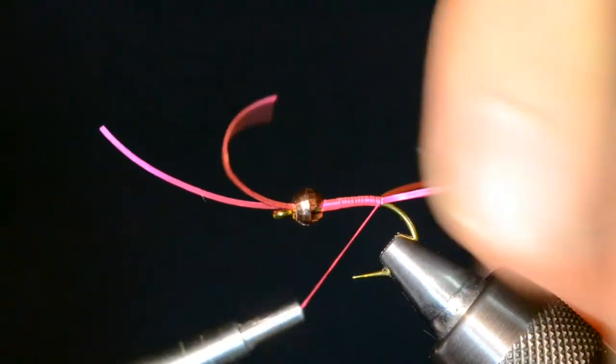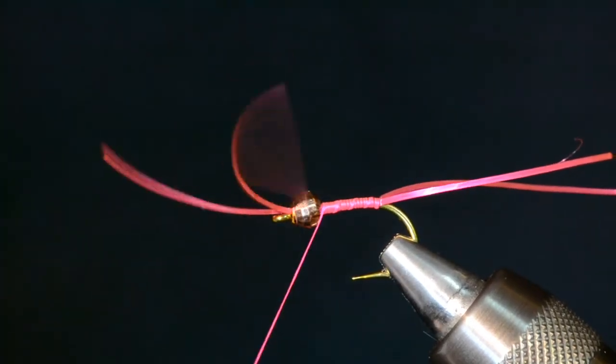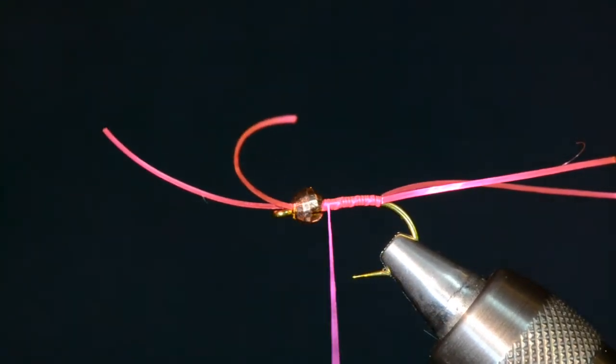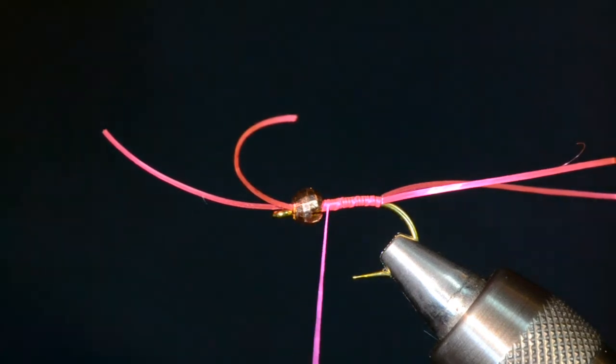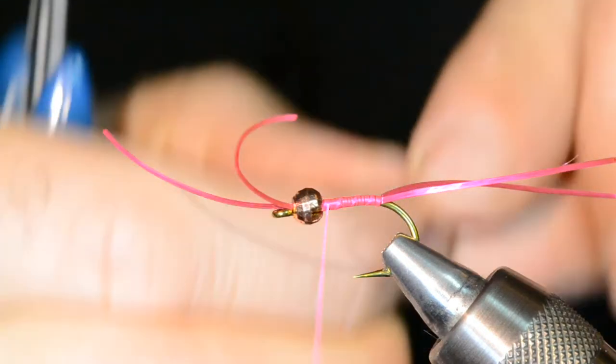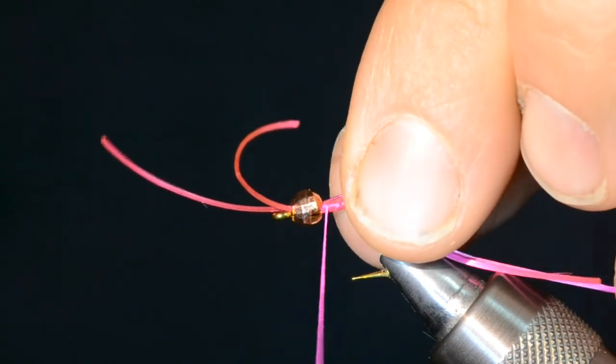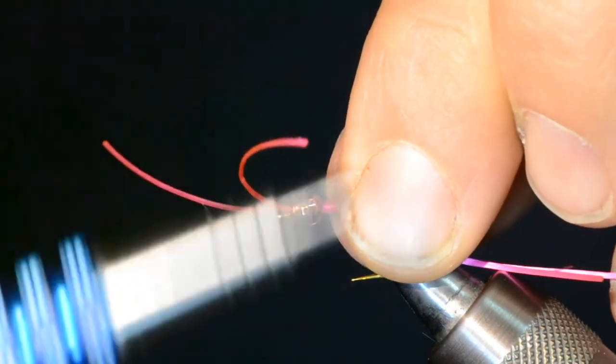Maybe one more wrap. I like where that's at. Now I'm going to take and advance my thread back up there right next to the bead. The next step is to tie in our wire that kind of forms the body of this guy. This is a fluorescent pink medium ultra wire, and I'm going to take and just put kind of the end of it just slightly inside the bead there and then just tie that guy down tightly.